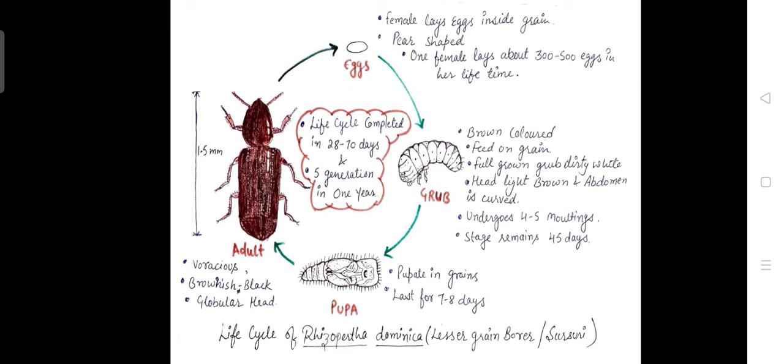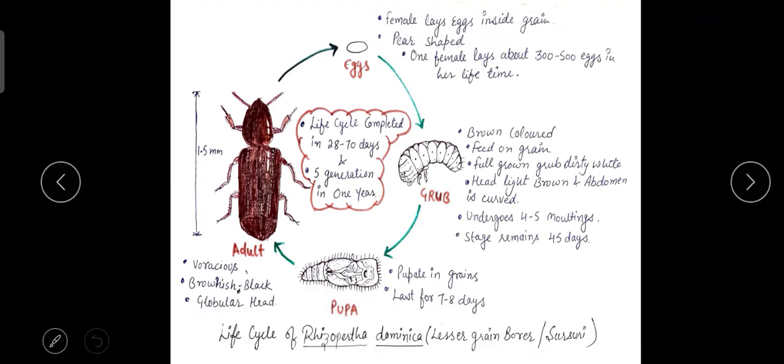The female lays eggs inside the grains, and the egg shape is pear-shaped. One female can lay 300 to 500 eggs in her lifetime. The grub is brown in color and feeds on grains. The fully grown grub is dirty white in color with a light brown head and curved abdomen. You can easily see here its abdomen is curved. There are four to five moltings, and the grub stage lasts for 45 days.